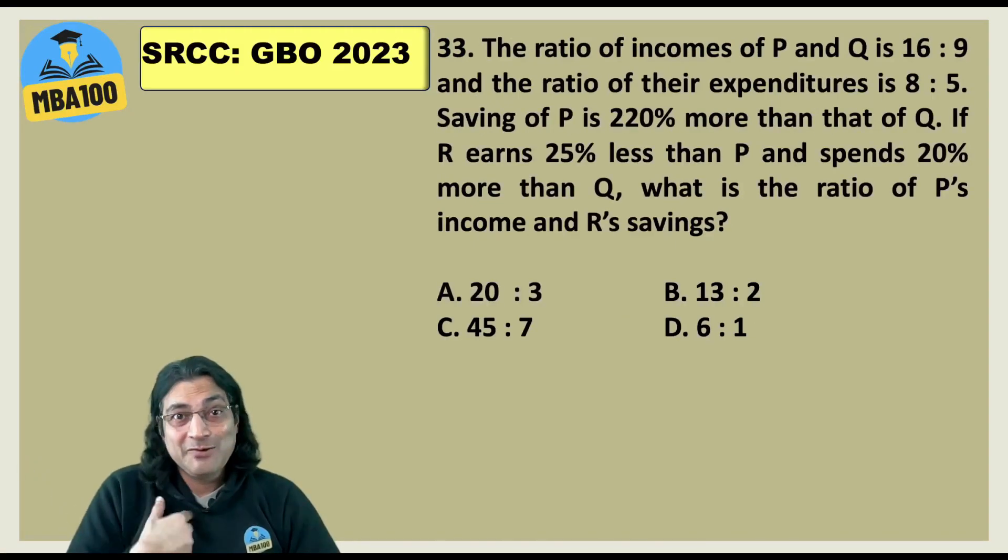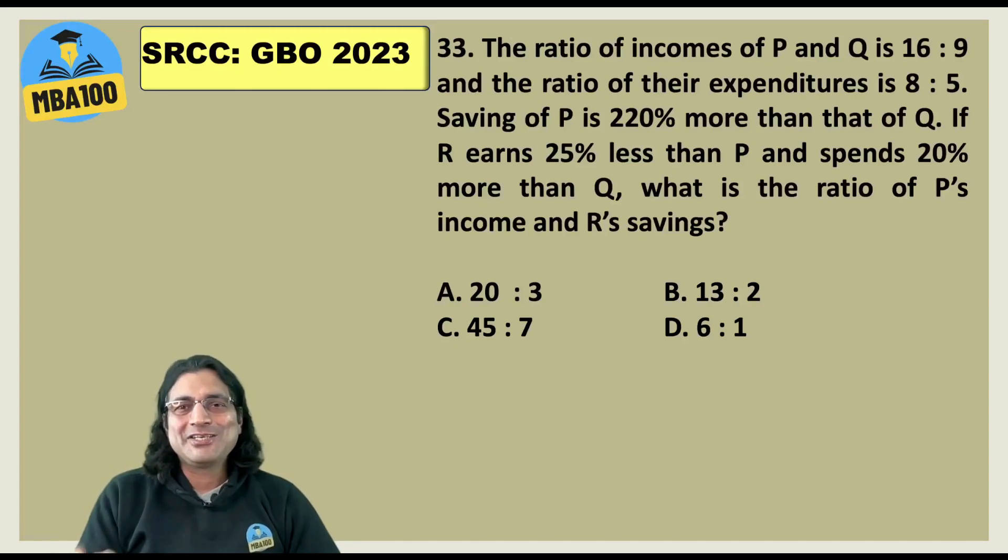Question number 33. Manayu. So the ratio of incomes, age-old question. They have skewed it slightly and the answer is 20 is to 3.